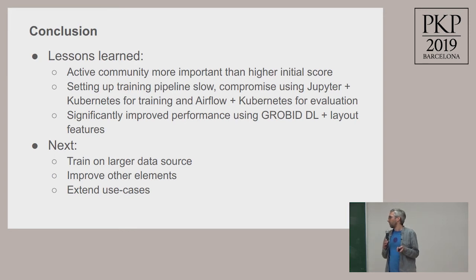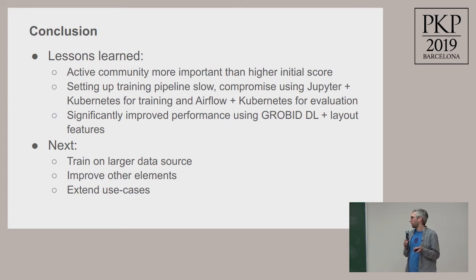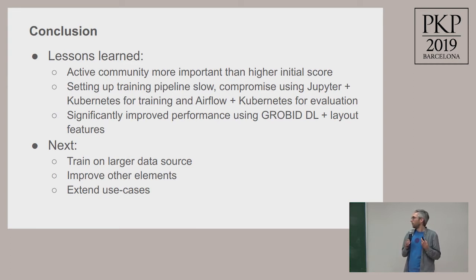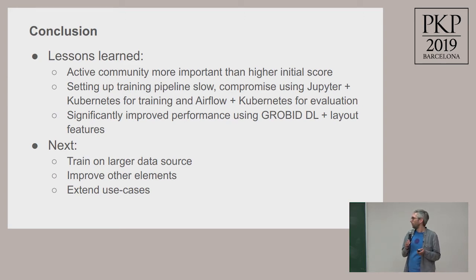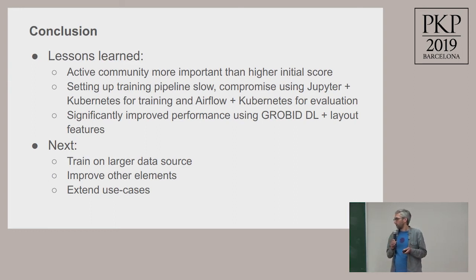Some lessons we learned: if you just look at performance initially, we would maybe choose Cermine, but Cermine is not actively developed and doesn't have the community that Grobid has — so community is really important. More technically, I initially used Airflow to do the training, which was quite a slow process, so I reverted to using Airflow just for conversion and evaluation, and Jupyter more to manage the training. The next step would be to train on more data sources — for example, BioArXiv seems to be a good source — and to improve other elements beyond the header information.